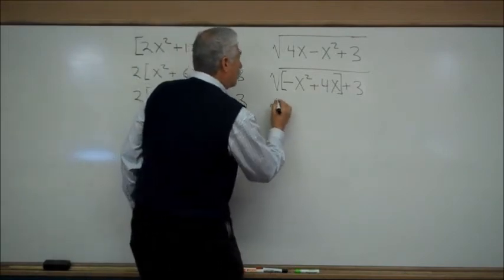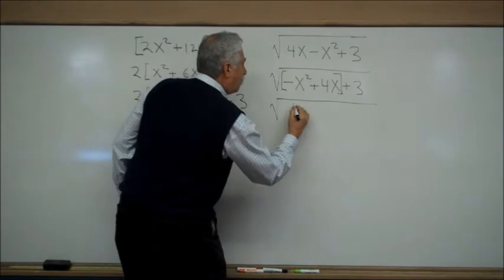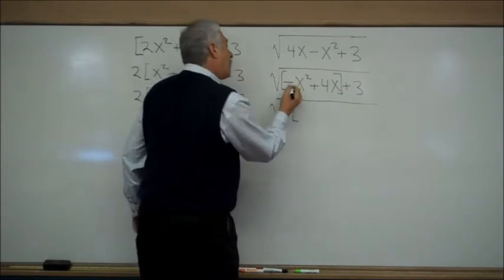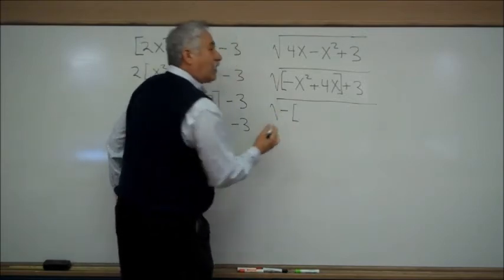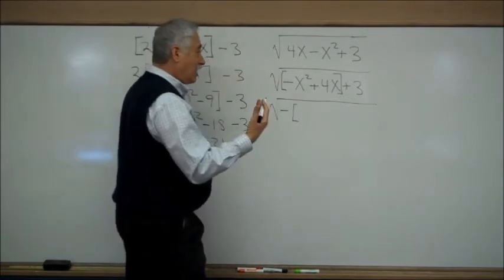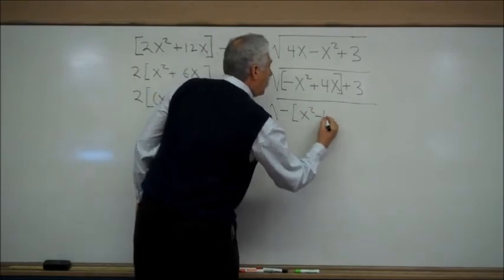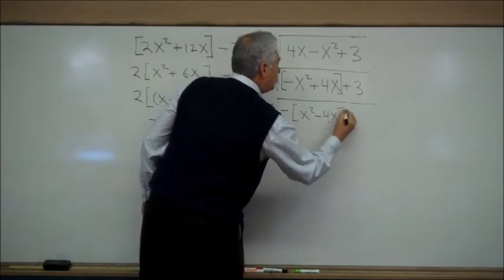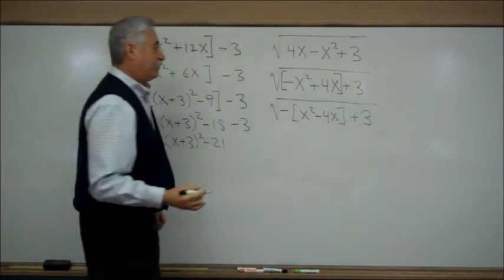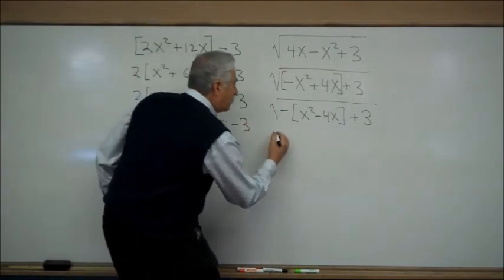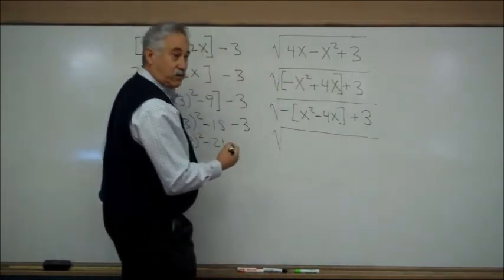Continuing, we're still working inside the square root. Inside the bracket, we want to factor out the lead minus or minus 1 if you think of it that way. I prefer to think of it as factoring out a minus. I get an x² - 4x plus 3.